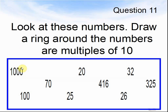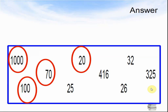Question 11. Look at these numbers. Draw a ring around the numbers that are multiples of 10. Pause the video until you are ready for the answers. The 4 multiples of 10 were 1000, 70, 20 and 100.